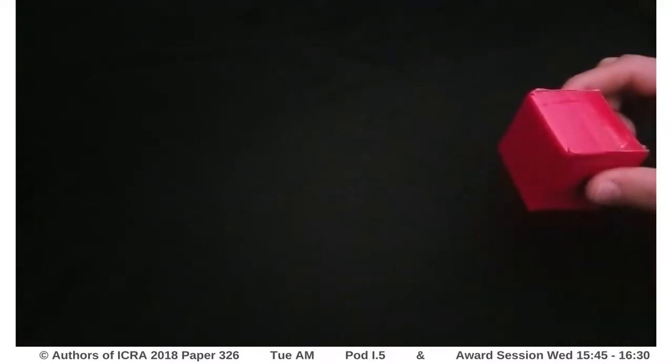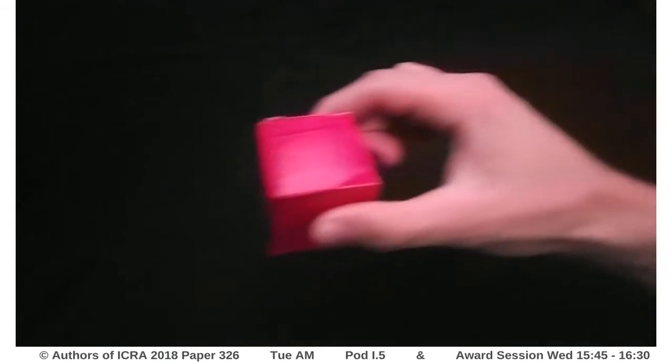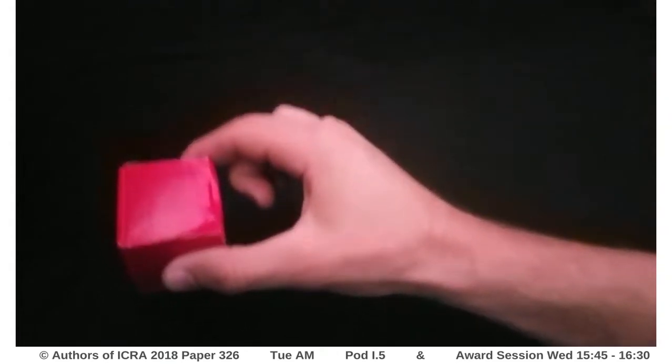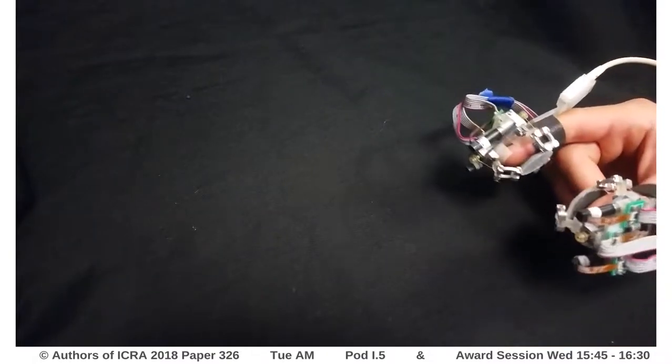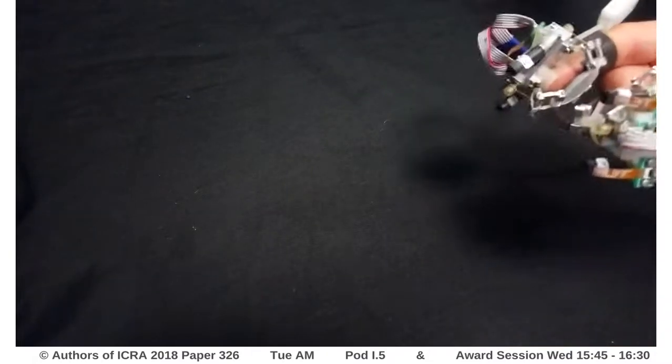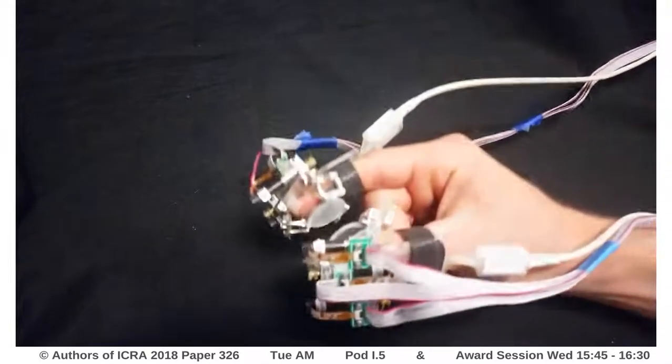We experience both kinesthetic and cutaneous afferents during a grasp, lift, and place task. Skin deformation feedback tries to mimic the cutaneous interaction forces experienced when interacting with a virtual object.